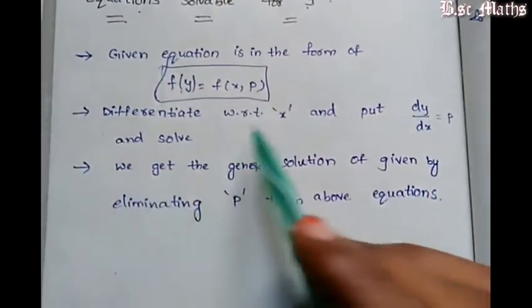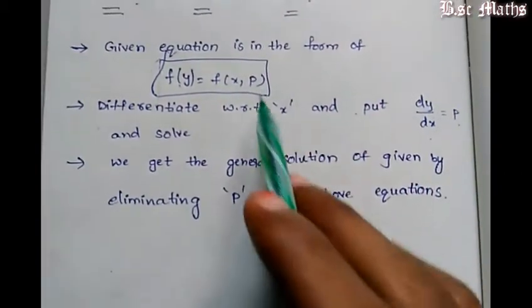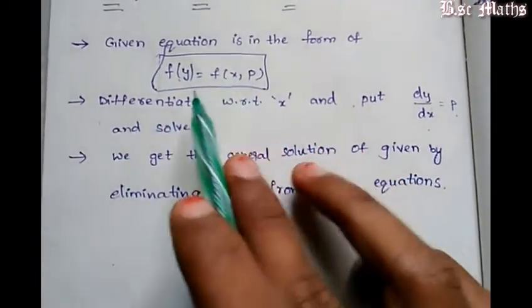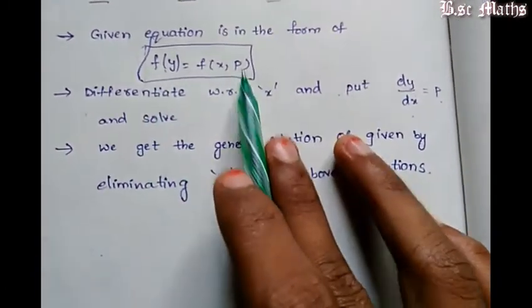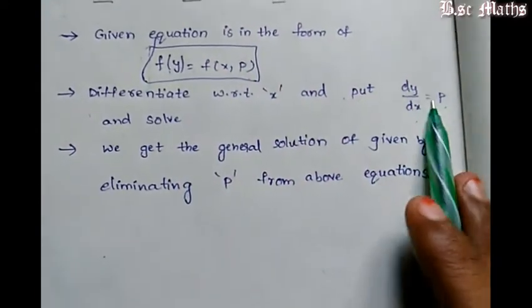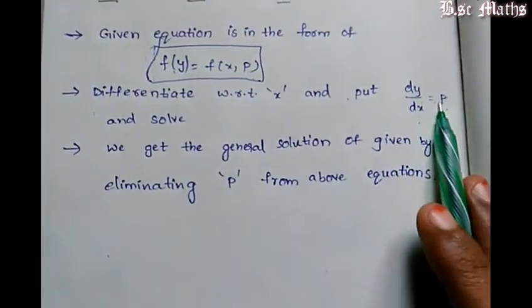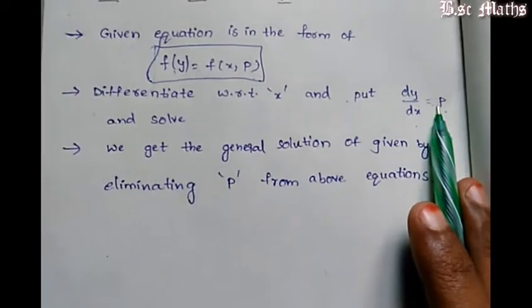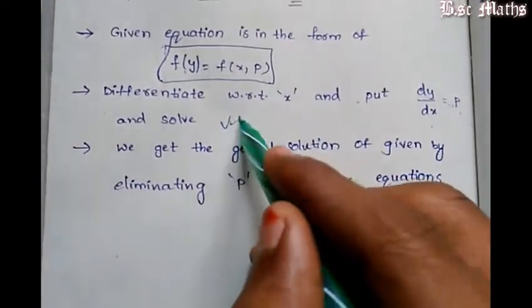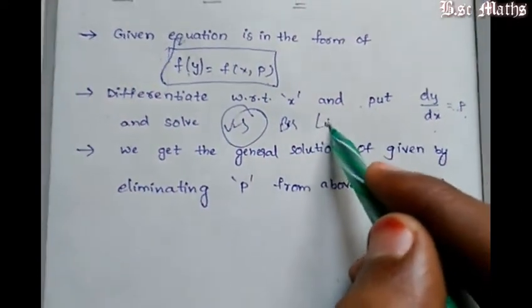Next, differentiate with respect to x and put dy by dx equals p. So if I differentiate with respect to x, we will do differentiation with respect to x, and we will put dy by dx equals p. We substitute using the variable separable method or linear differential equation.